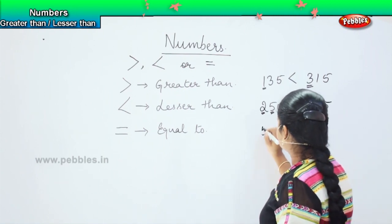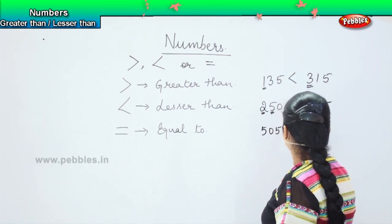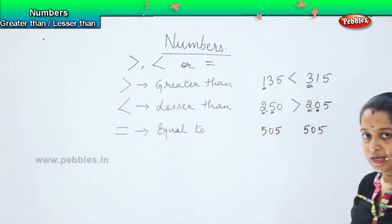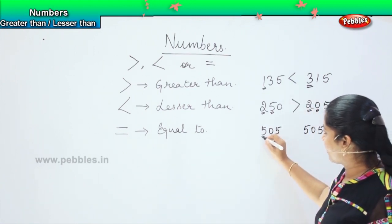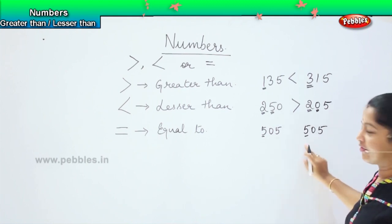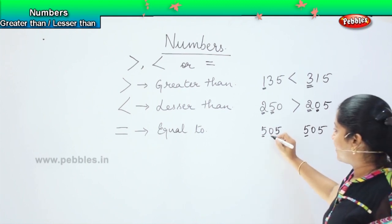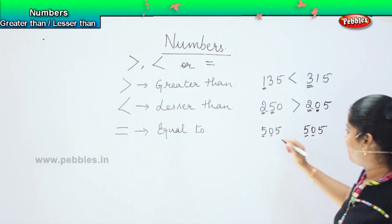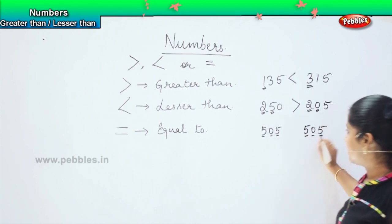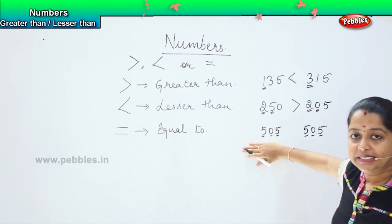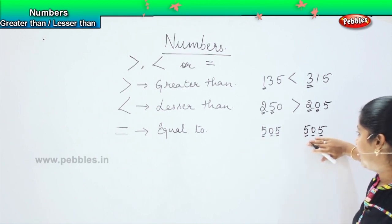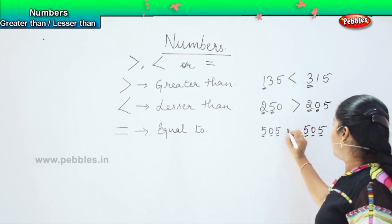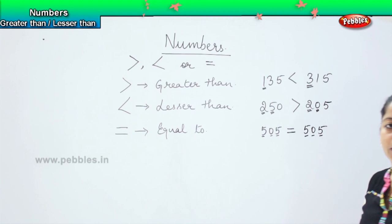Now, if I say my next number is 505 and 505, what will I do here? I will check the hundreds place. Both are 5. It is the same. Coming to the tens place, again both are same. Coming to the ones place, they are also same. So, whatever number is given on my left hand side, it is equal to the number given on my right hand side. So, I will use the symbol equal to.